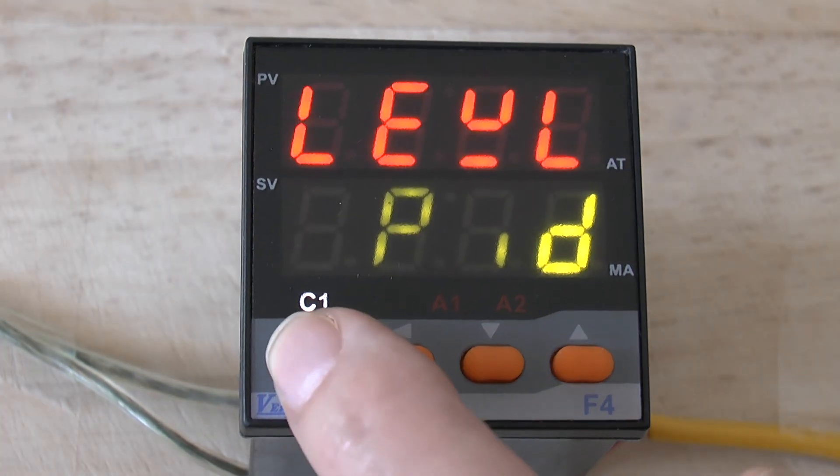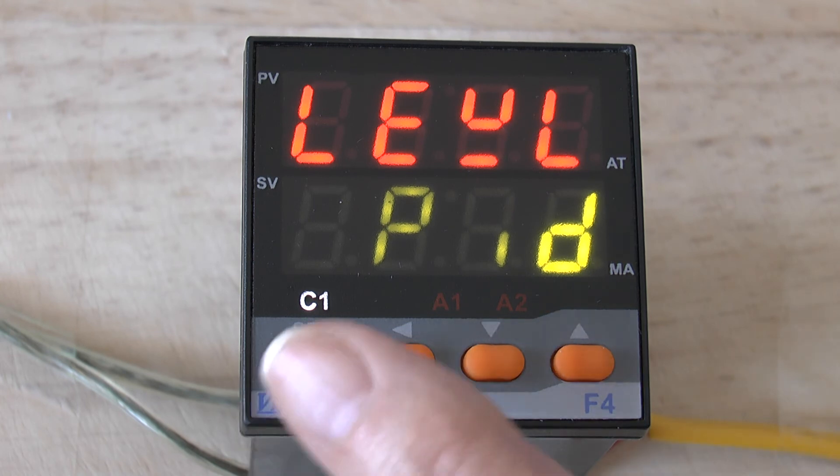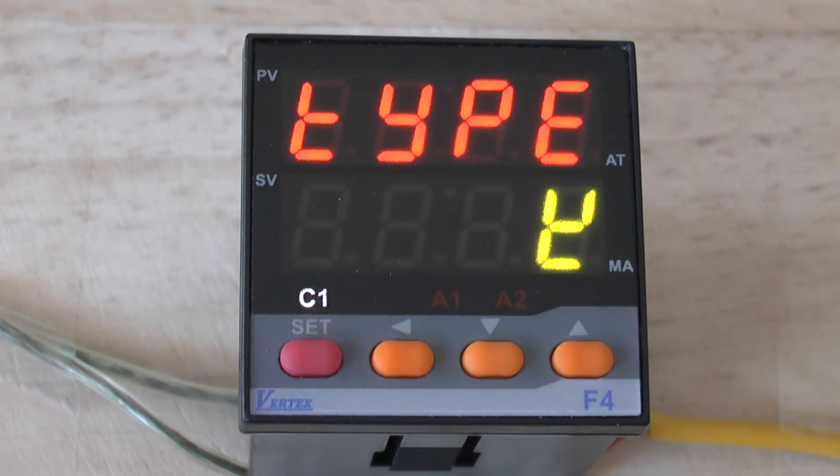Press the SET button once more and this is where we choose the different levels. If we use the UP button, the next level is the option level. Press the SET button once and the first parameter in this level is the type. This is where you choose your thermocouple type.